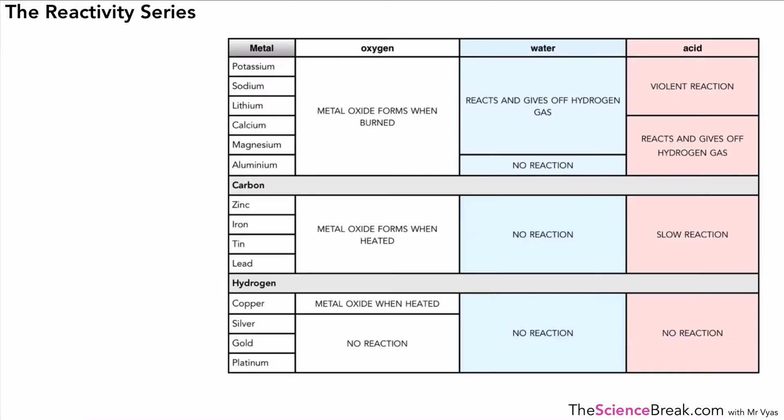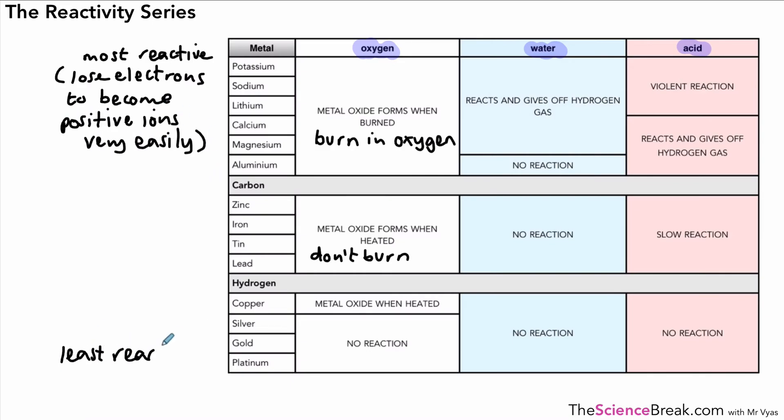We can produce a table like this. We've got the metals on the left-hand side, and the reactions with oxygen, water, and acid. For the reaction with oxygen, the most reactive burn in oxygen. Further down, from zinc to lead, they don't burn in oxygen, but if you heat them enough they will form a metal oxide. Most reactive at the top, least reactive at the bottom. The most reactive lose electrons much more easily to become positive ions, whereas the ones further down don't become positive ions—they don't lose electrons.